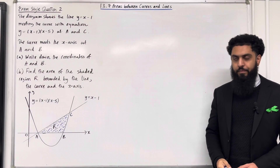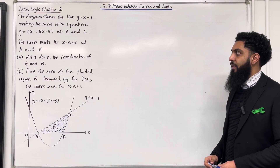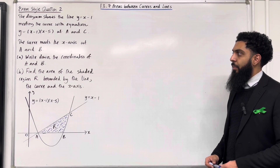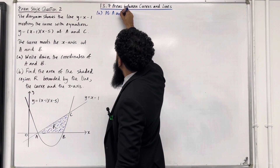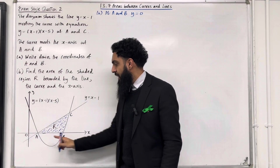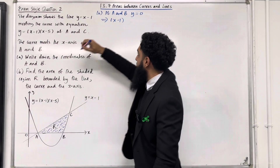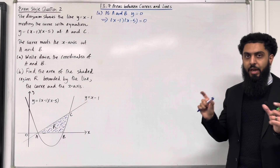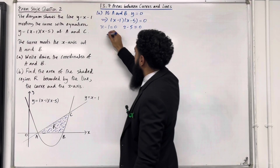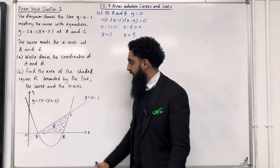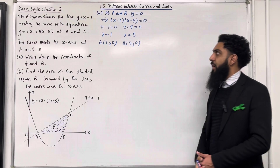Moving on to Exam Style Question 2. The diagram shows the line with equation y equals x minus 1 meeting the curve with equation y equals (x minus 1)(x minus 5) at A and C. The curve meets the x-axis at A and B. Part A: write down the coordinates of A and B. At A and B, y equals 0 because they are x-intercepts. This implies (x minus 1)(x minus 5) equals 0, so x equals 1 or x equals 5. Therefore A is (1, 0) and B is (5, 0). This completes Part A.